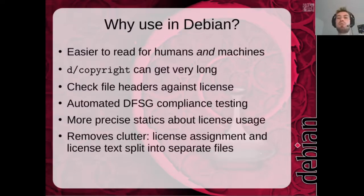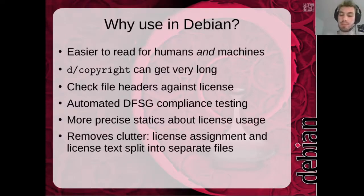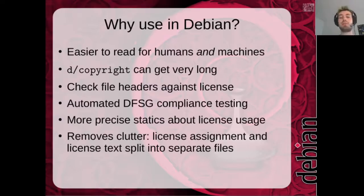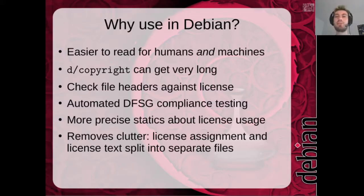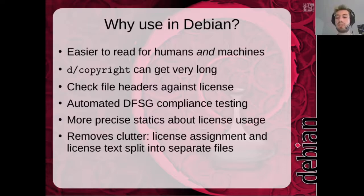Why would we want to use them in Debian? We have DEP5, which is the machine-readable copyright format. It would be much more readable for both machines and humans if, instead of writing out all license tags — there are only a couple stored on Debian systems like the GPL — having more of them standardized makes it shorter and easier to read, and also shortens the copyright file in some cases pretty dramatically.